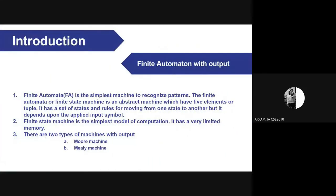So what are Mealy and Moore machines? They are all finite automata with output. Finite automata is the simplest machine to recognize patterns. The finite automata, or finite state machine, is an abstract machine which has five elements or a tuple. It has a set of states and rules for moving from one state to another, depending upon the applied input symbol. The finite state machine is the simplest model of computation.